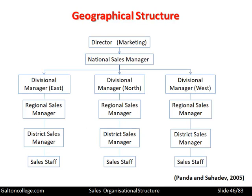In terms of geographic structure, we have an organizational chart similar to this: the Director of Marketing at the top, then the National Sales Manager, and then different divisions — Divisional Manager for the East, Divisional Manager for the North, and Divisional Manager for the West. Under those divisional managers we have Regional Sales Managers, then District Sales Managers, and then the sales staff. That's a view of a structure that may be deployed by adopting a geographic based sales effort.